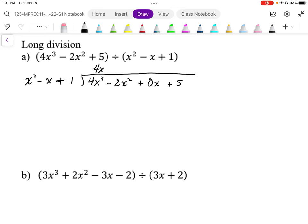To get our 4x³ - 4x² + 4x, we subtract this. We end up with 2x² - 4x + 5, so we're going to have plus 2: 2x² - 2x + 2.